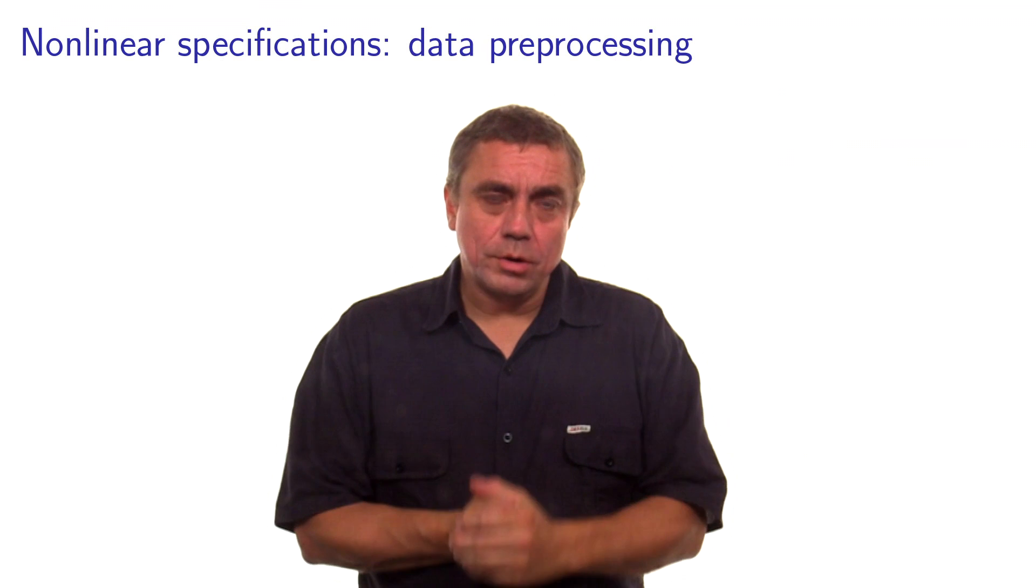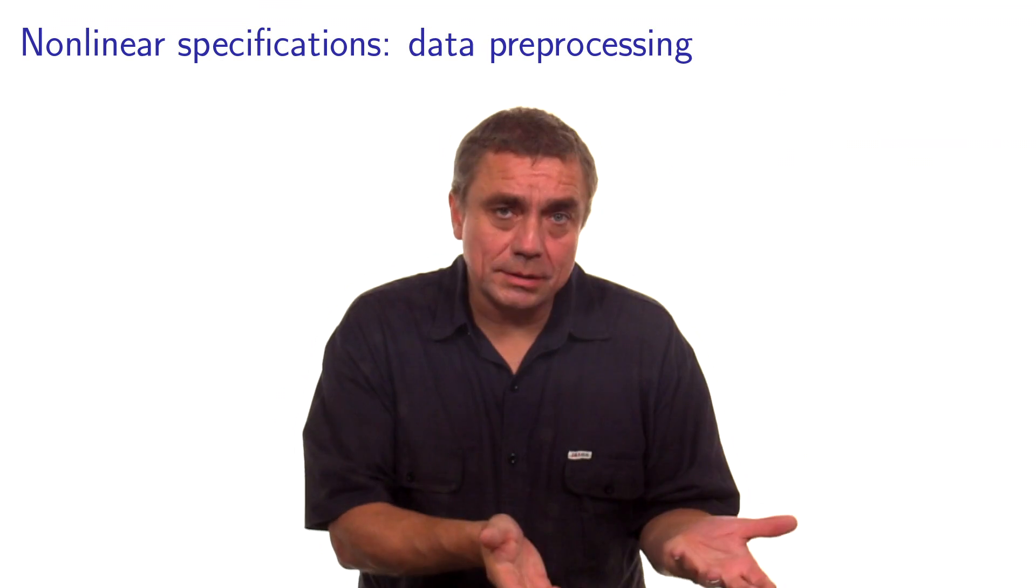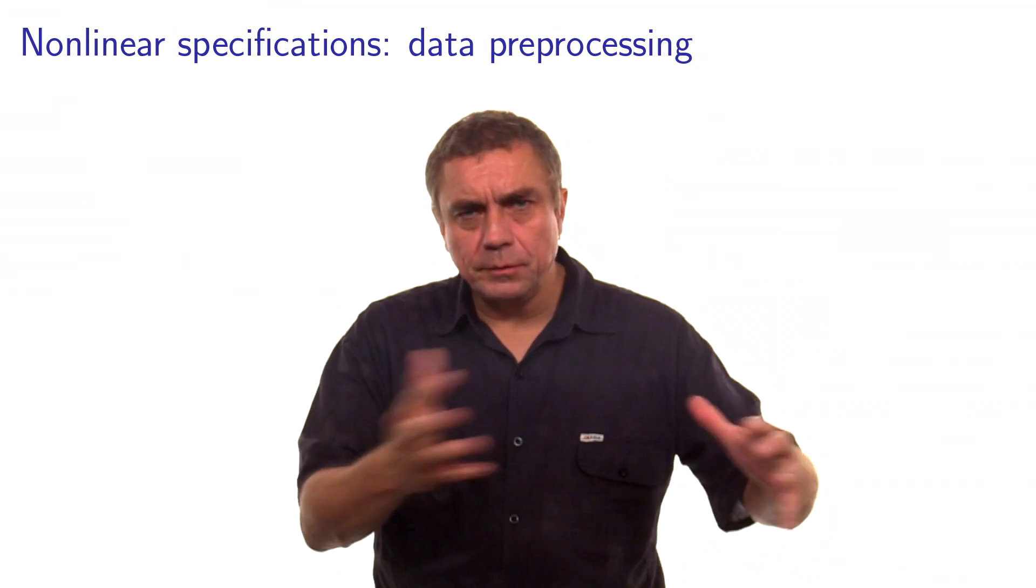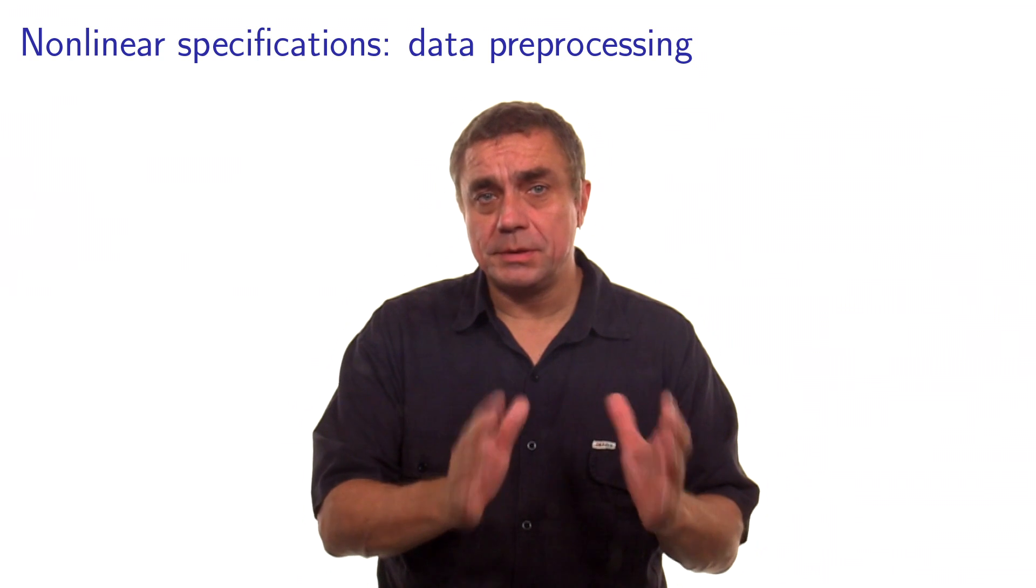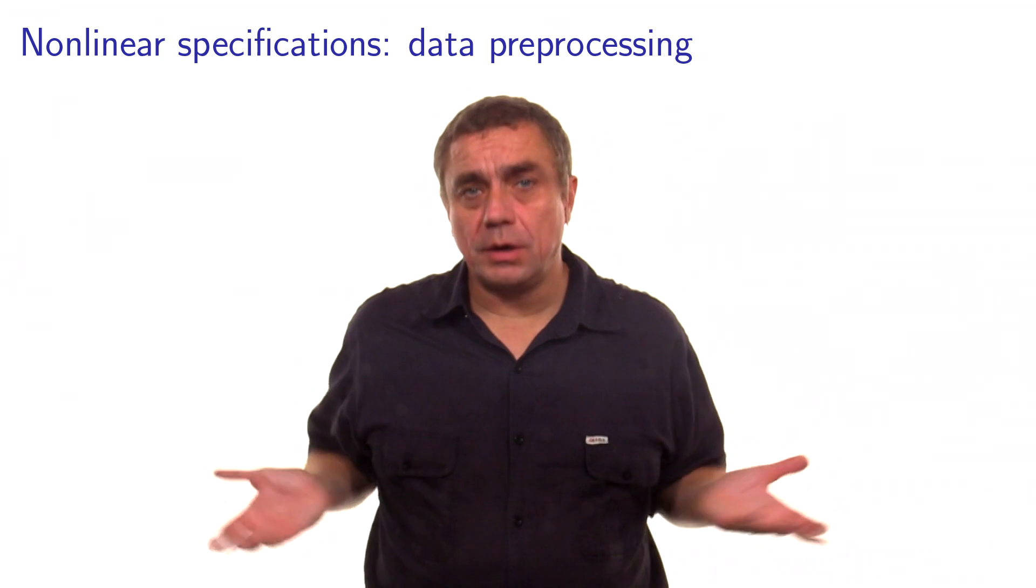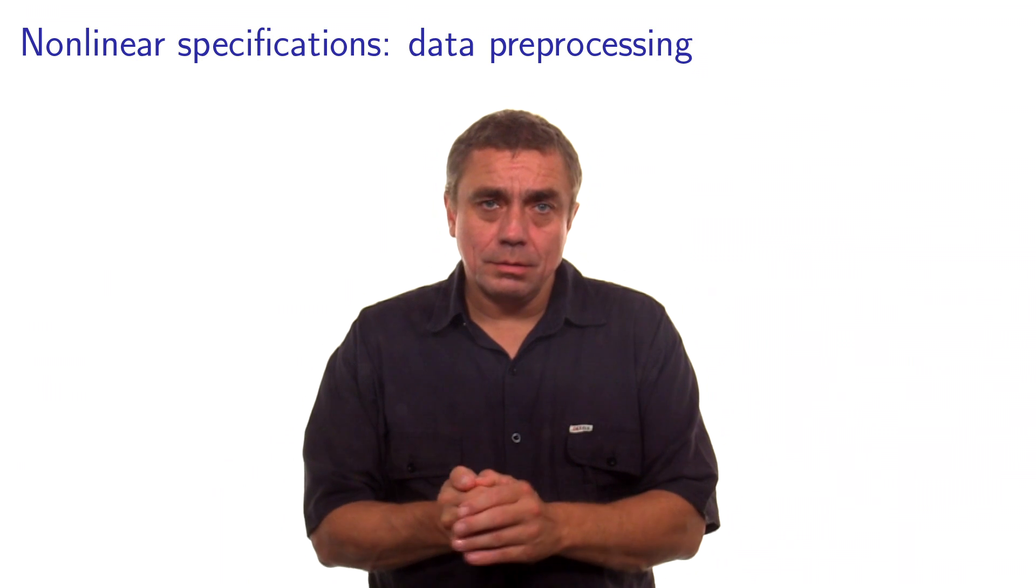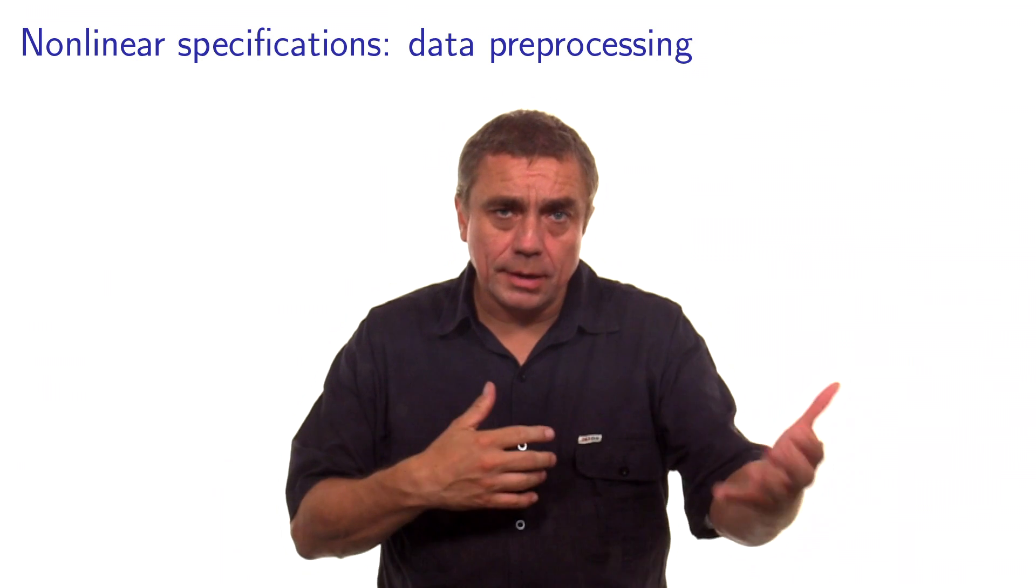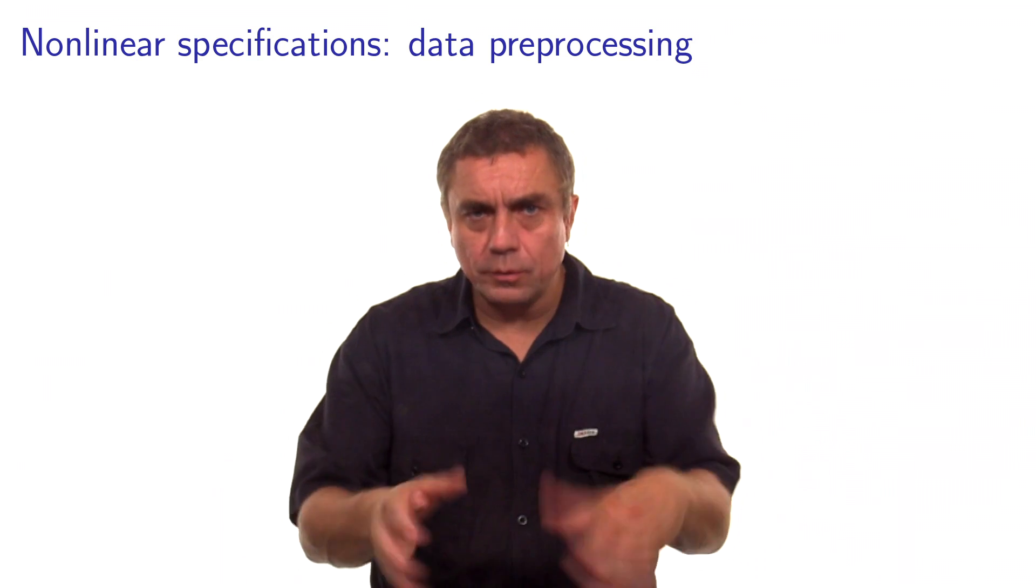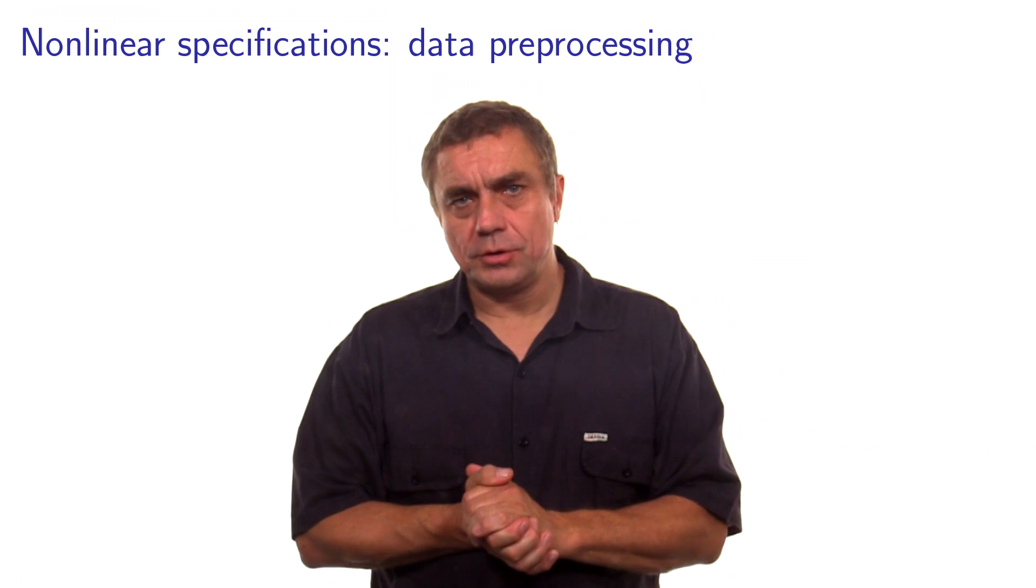Hello. So we continue our investigation of the specification of the deterministic parts of the utility function. So far we have seen a lot of specification based on the linear in parameter specification. We have seen that it can allow us to model quite rich behavioral assumptions already. But sometimes it's not sufficient. Sometimes we are willing to go beyond that and to use non-linear specifications. This is the topic of this video: to understand what kind of non-linear specification we can use and what are the behavioral implications of this specification.